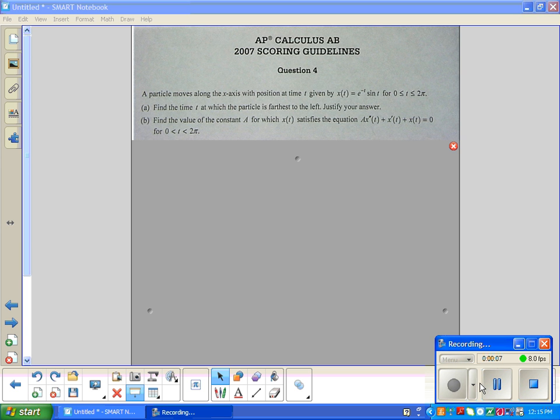And again your trig will come back to really haunt you or help you on this one. A particle moves along the x-axis of position at time t given by x(t) = e^(-t)sin(t) for 0 to 2π.